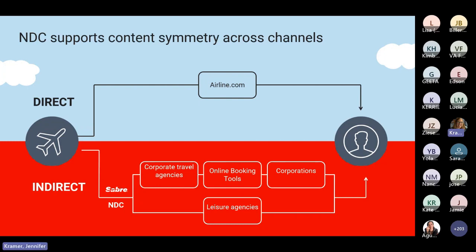While NDC is rooted in the airline industry, other links in the travel value chain stand to benefit also. For airlines, they can create new value with new content options, expand distribution reach to increase sales and revenue, gain greater control over what is sold, when, where, and to whom, and have more differentiation through rich content like media. For agencies, there is greater access to new types of content, new cross-sell and upsell opportunities, and the ability to differentiate and win new business during RFI and RFP processes, especially with negotiated content.